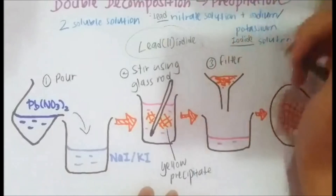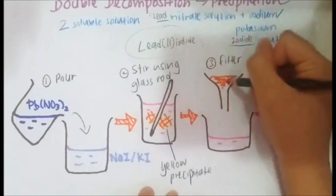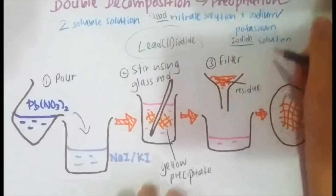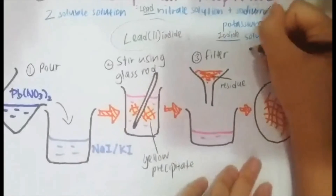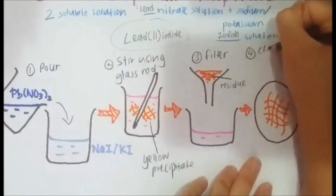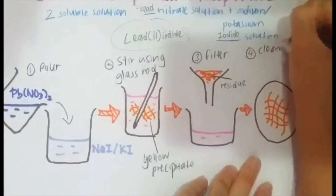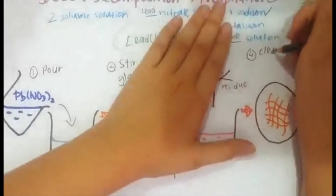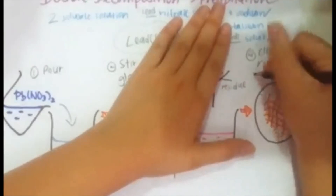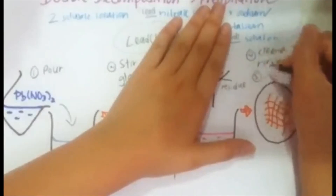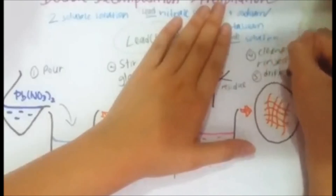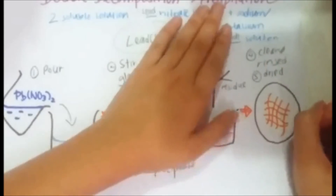Filter the mixture to obtain the lead iodide through the residue. Lastly, rinse it with distilled water and dry it between two filter papers.